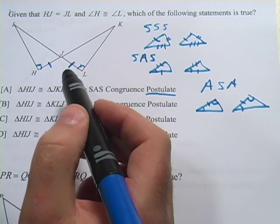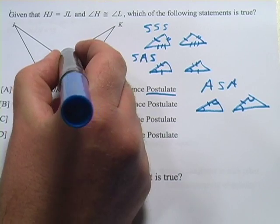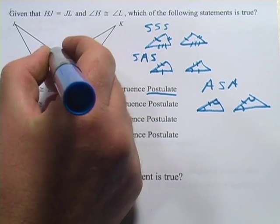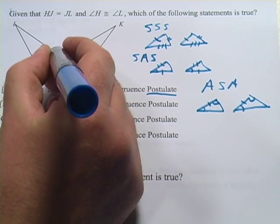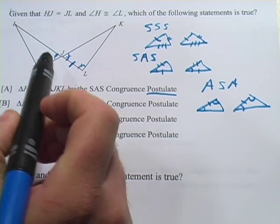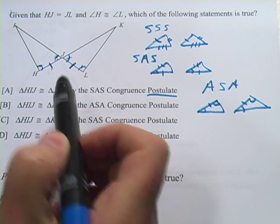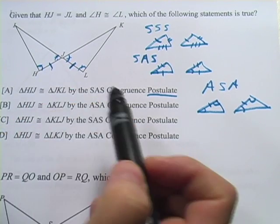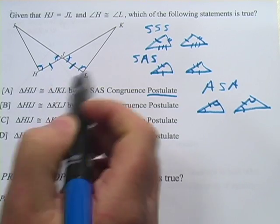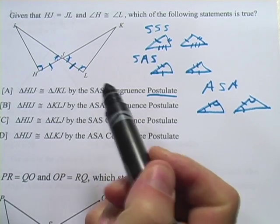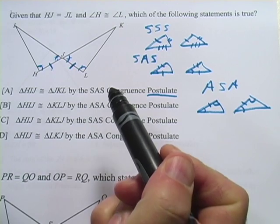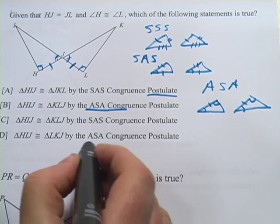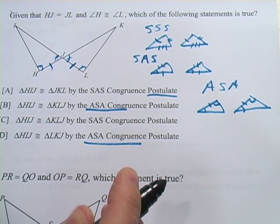So is there anything else we can figure out from this diagram that would give us either a side or an angle? And there is — it's this pair right here. These are vertical angles, so we know that these will be the same. And now what we have is angle, side, angle — all in a row, with the side included between the two angles. So these two triangles are indeed congruent to each other, and it's by angle-side-angle.